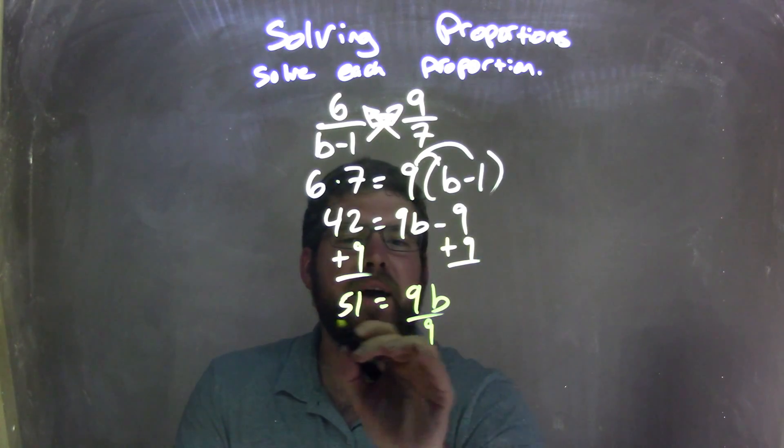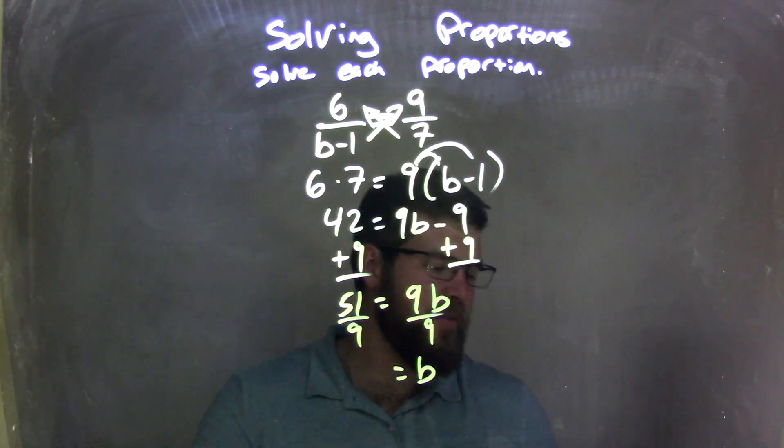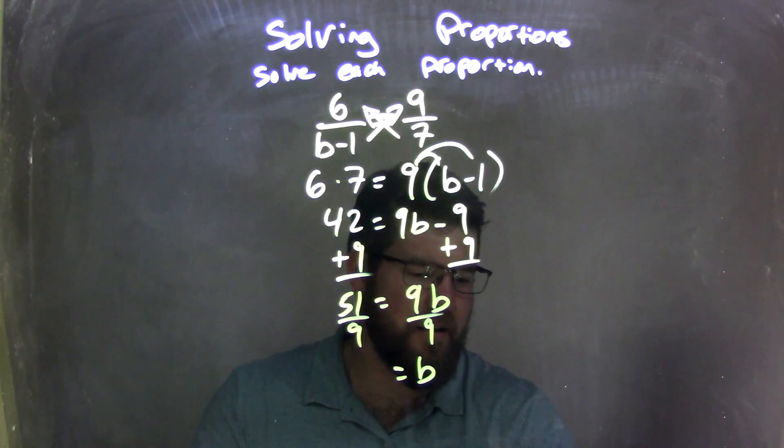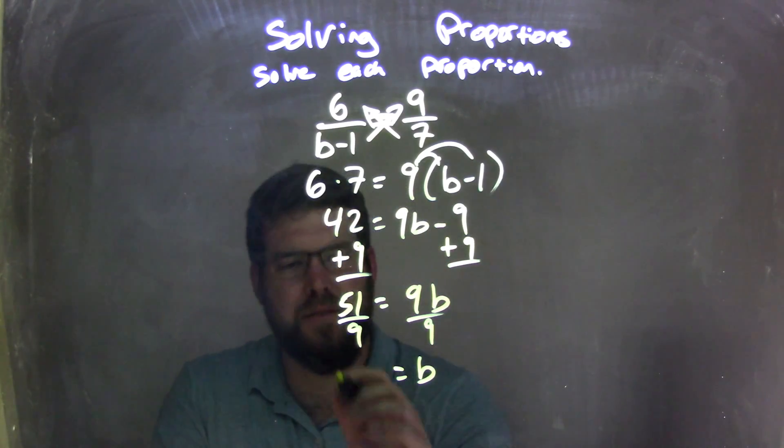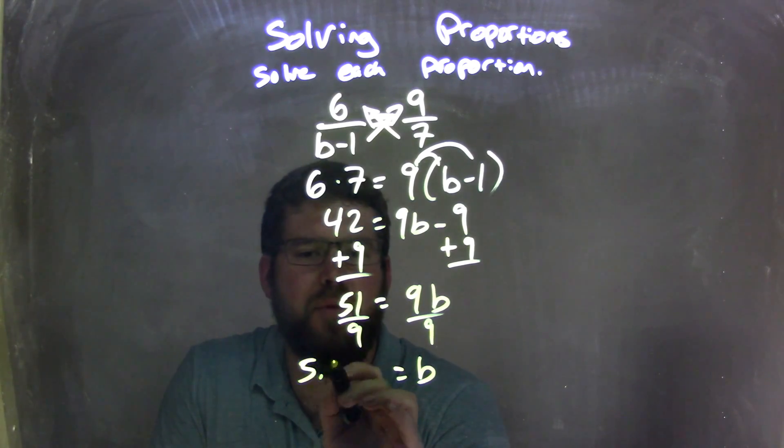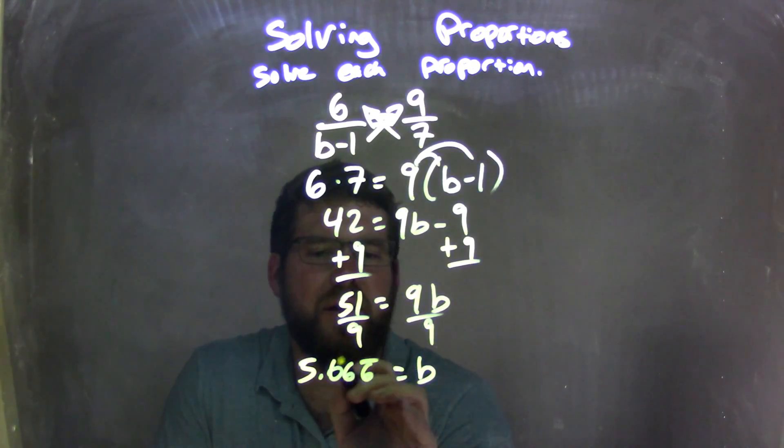I divide by 9 and what's 51 divided by 9? So here's my calculator here, 51 divided by 9 comes out to be 5.666666, 5.6666 repeating over there.